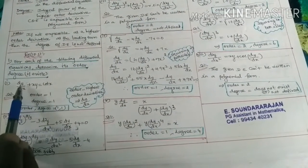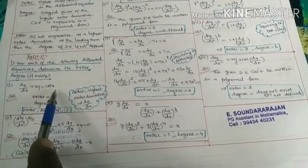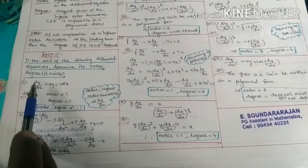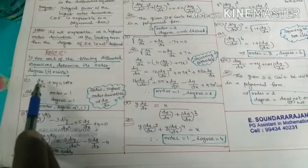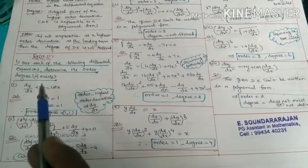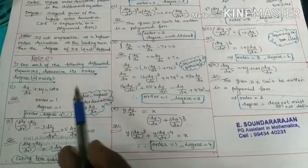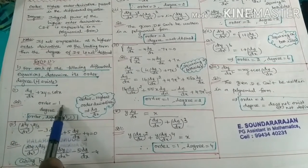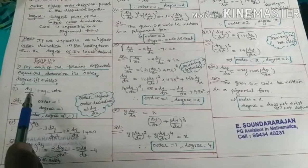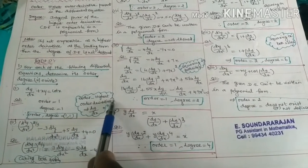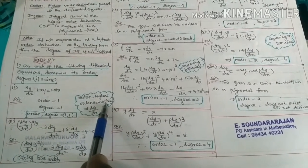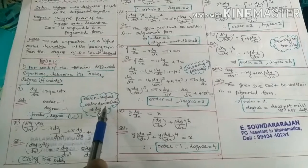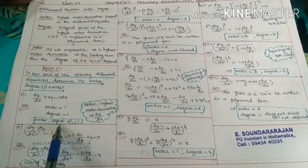First question: dy/dx + xy = rx. Here dy/dx is a first order derivative, so the highest order derivative is dy/dx, which is order 1. The degree is the integral power of the highest order derivative, which is also 1. Therefore, order = 1, degree = 1.